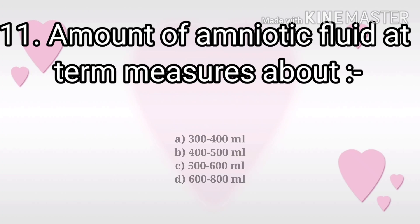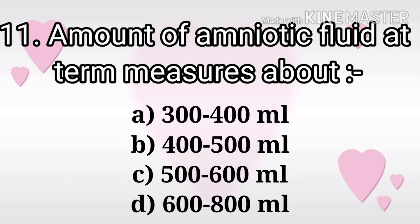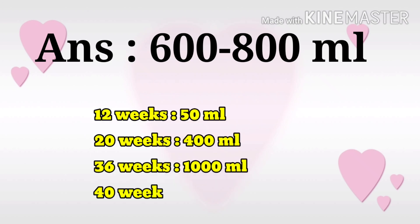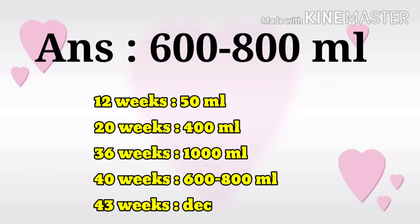Next question: Amount of amniotic fluid at term measures about? The options are 300–400 ml, 400–500 ml, 500–600 ml, and 600–800 ml. The answer is 600 to 800 ml. At 12 weeks it is 50 ml, at 20 weeks 400 ml, at 36 weeks 1000 ml, at 40 weeks 600–800 ml, and at 43 weeks it decreases to 200 ml.